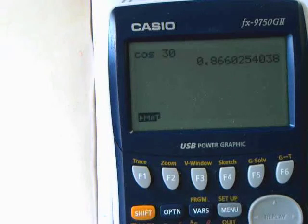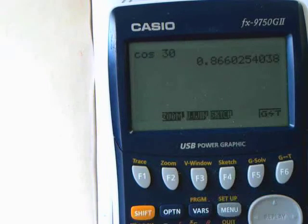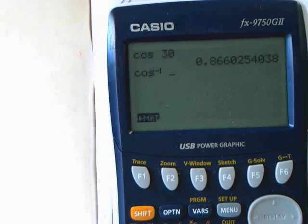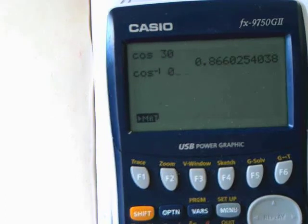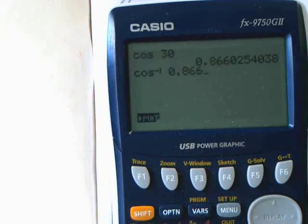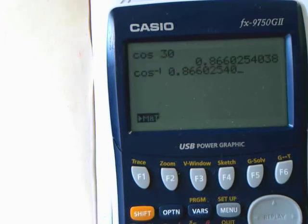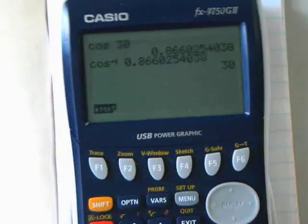If I go cos to the minus 1, sometimes called arc cos, sometimes called shift cos, and I type in 0.86602540538, I can look at the calculator on that. And I press out, what do you think I'm going to get? What I'm hoping I'm going to get? 30. So that's what I've got there.